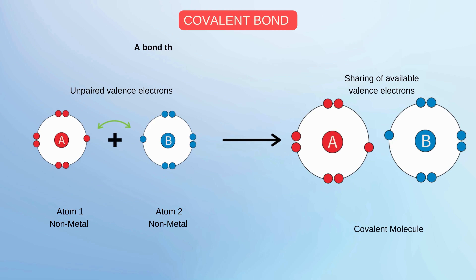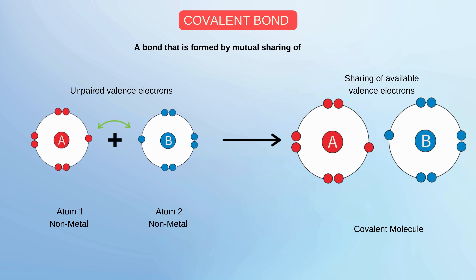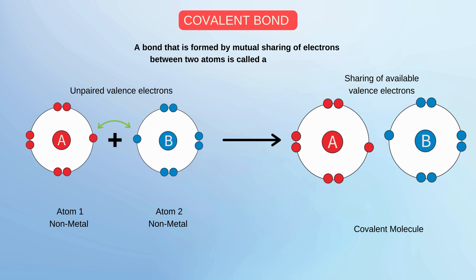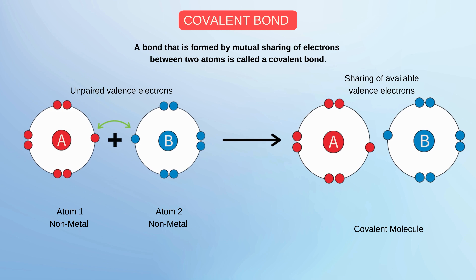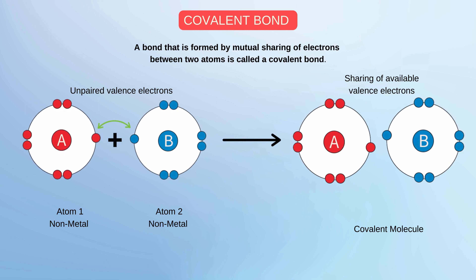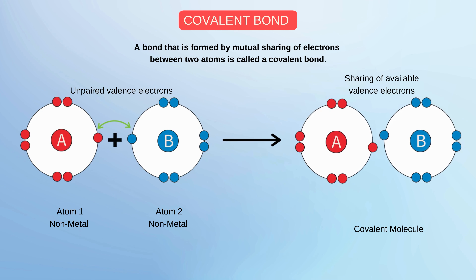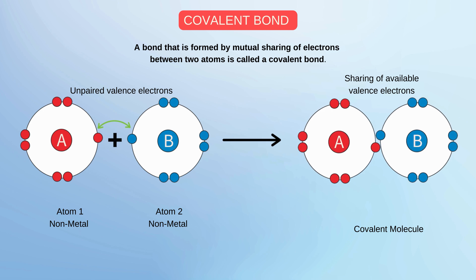Let's come towards today's topic: covalent bond. A bond that is formed by mutual sharing of electrons between two atoms is called covalent bond. Asan alfaz mein hum yeh keh sakte hai, covalent bond chemical bond ki wo qisam hai, jis mein atoms apne valence shell ke electrons ki mutual sharing karke bond bantate hai.